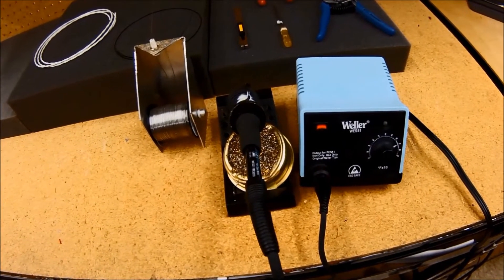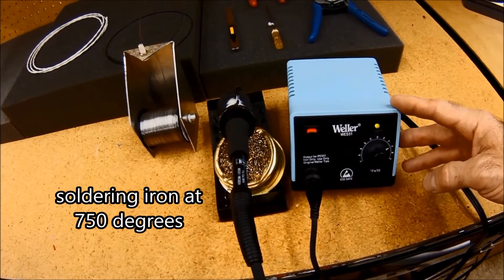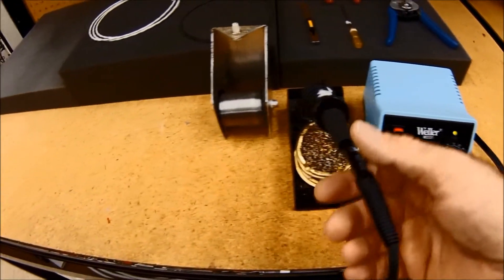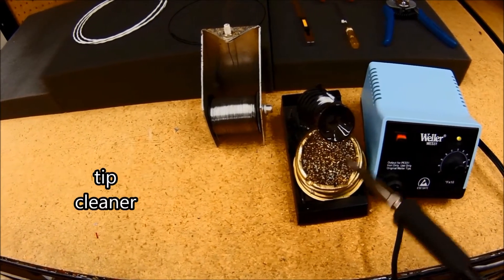First, here's a look at some of the tools I'm going to be using for this job. What I have here is a soldering iron, pencil type, set at 750 degrees. I have a small tip on it and a tip cleaner.